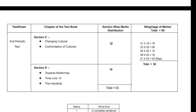Second Periodic Test: Section C Changing Culture, Confrontation of Cultures, 32 Marks. Section D Toward Modern Asia, Timeline 4, The Industrial, 18 Marks. Total 50 Marks.